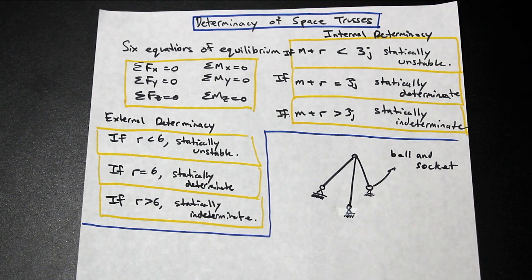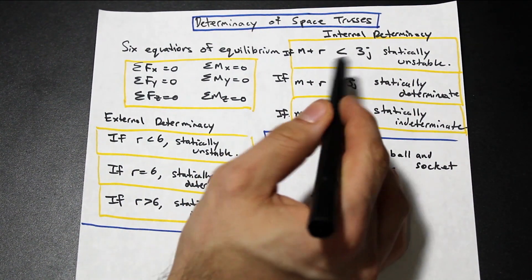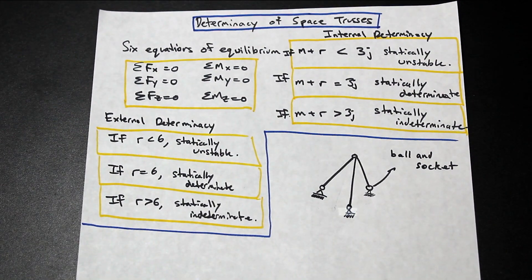And that's actually the main difference between two-dimensional and three-dimensional trusses. So there's two actually types of determinacy that are required to be checked for in space trusses.